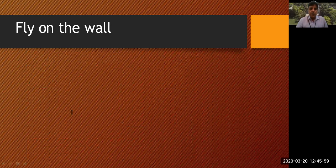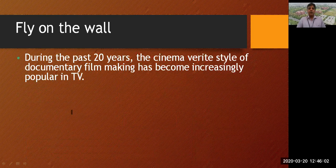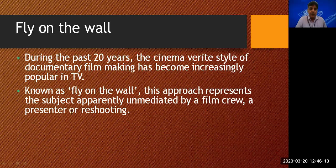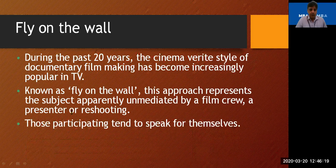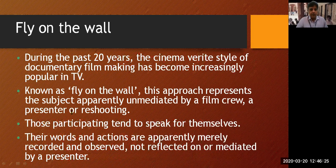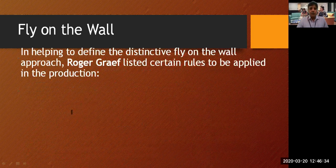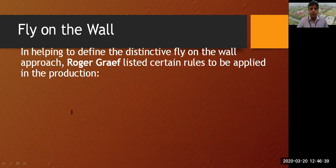The second major movement is fly on the wall. During the past 20 years, the cinema verité style of documentary filmmaking has become increasingly popular on television, known as fly on the wall. This approach represents the subject apparently unmediated by a film crew, a presenter, or reshooting. Those participating tend to speak for themselves — their words and actions are merely recorded and observed, not mediated by a presenter. Certain rules apply in its production, such as filming events exactly as they happen.